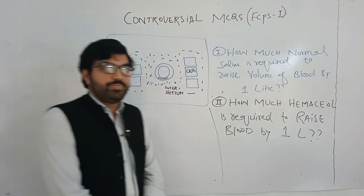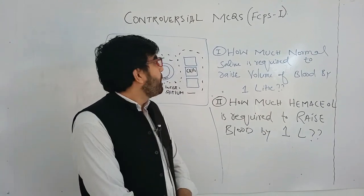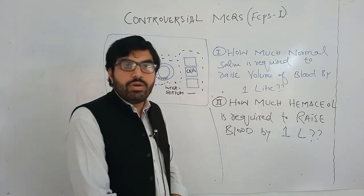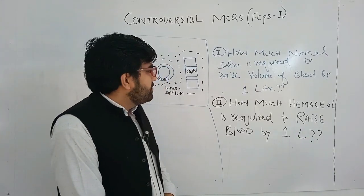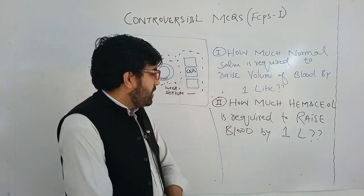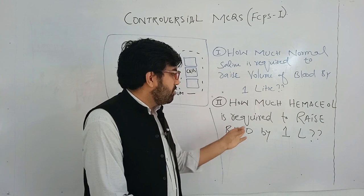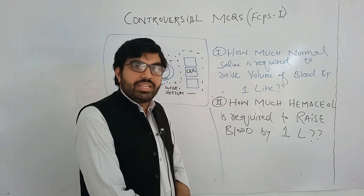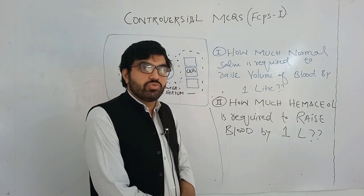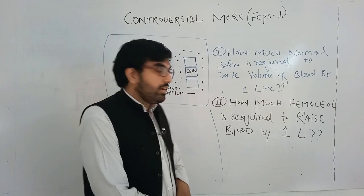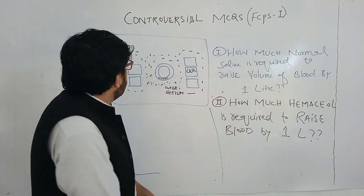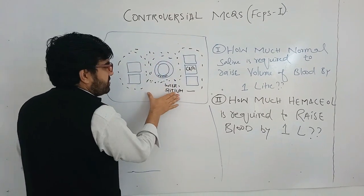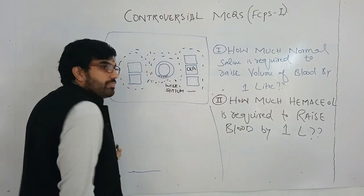There is another MCQ: how much normal saline is required to raise the volume of blood by one liter? Another MCQ: how much Haemaccel is required to raise blood volume by one liter? We must know the concept to solve these MCQs. I drew a diagram showing the vascular compartment, the interstitium, and the cells.